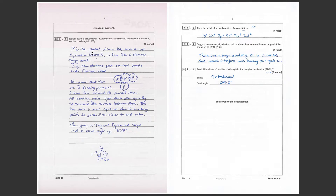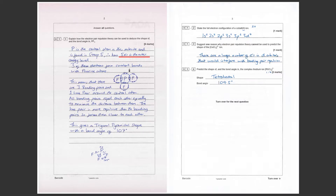For six marks, nothing should be too obvious to write. Start with the fact that the central atom in phosphorus trifluoride is phosphorus. This central atom is in group five, therefore has five electrons in the outer energy level. Don't just say it has five electrons — link being in group five to the electron count. Three of those five electrons form covalent bonds with the fluorine atoms.